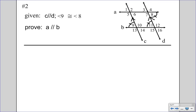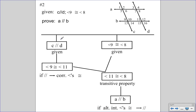So there's my outline, and then this is the actual proof. Walking through it: C is parallel to D, which makes 9 and 11 congruent, because if parallel, then corresponding angles are congruent. We also know that 9 and 8 are congruent from the given. So if 9 is congruent to 11 and 9 is congruent to 8, then 11 and 8 must be congruent as well by the transitive property. And if angle 11 is congruent to angle 8, then line A is parallel to line B, because if alternate interior angles are congruent, then the lines are parallel.